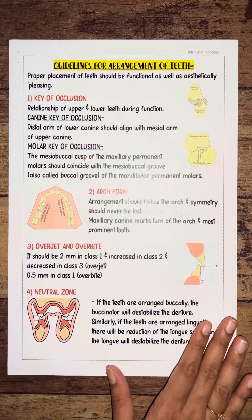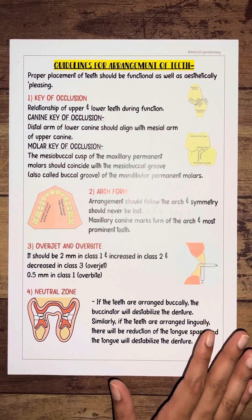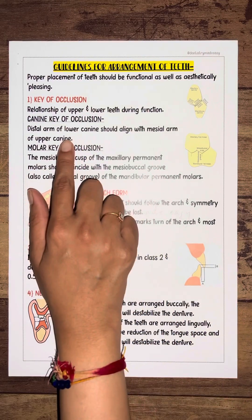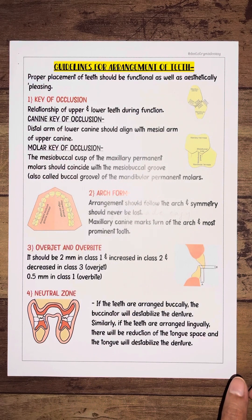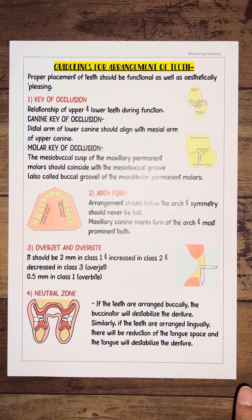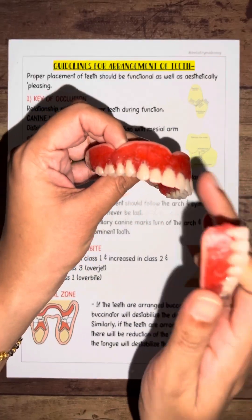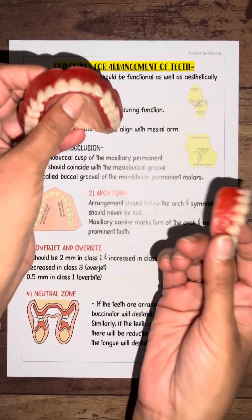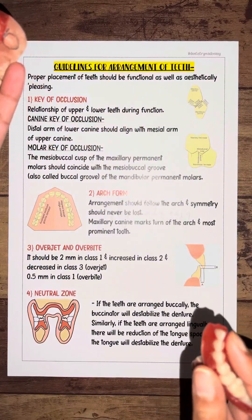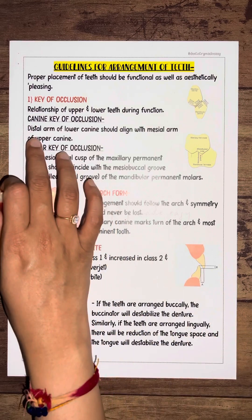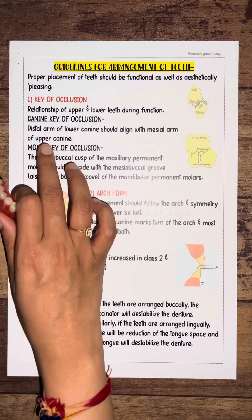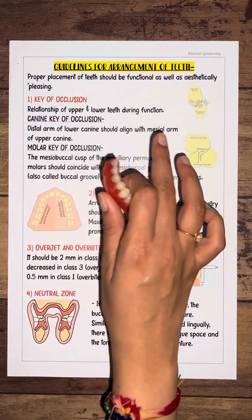The main four guidelines for teeth arrangement include the key of occlusion. Key of occlusion is basically the relationship of the upper and lower teeth. This is the maxilla and this is the mandible. It should be related to the canine, so in the canine key of occlusion...